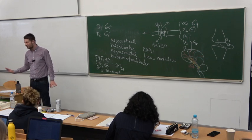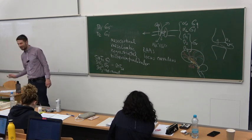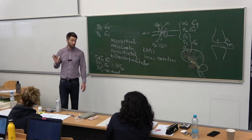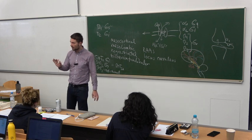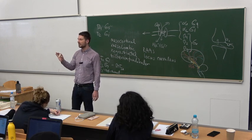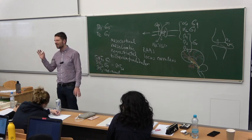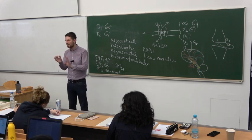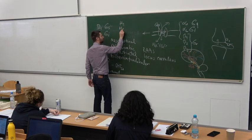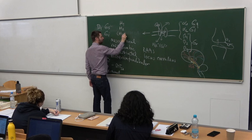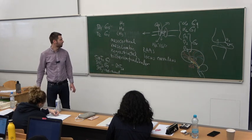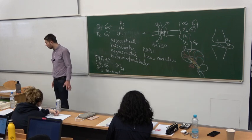We're coming to the end. The next neurotransmitter I want to mention is histamine. When we talked about histamine metabolism, we said that in the brain it's a super minor neurotransmitter. However, it has at least three receptor subtypes: H1, H2, and H3. They are all G-protein coupled receptors.